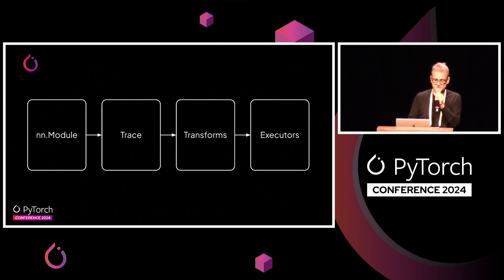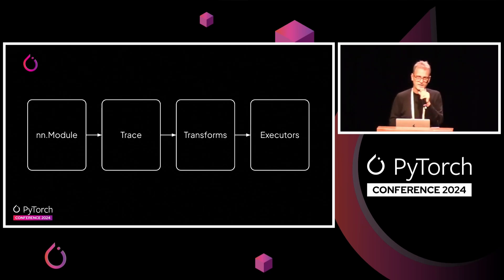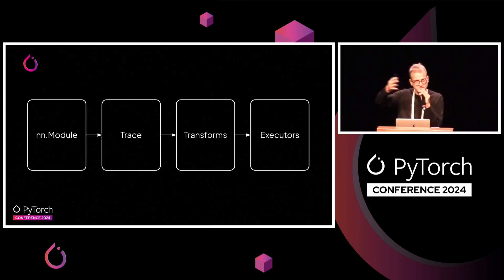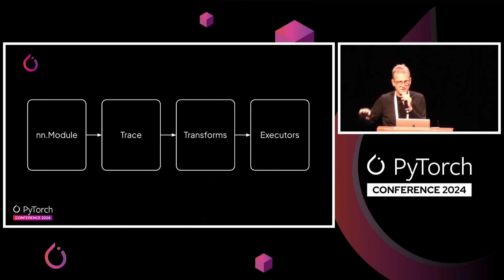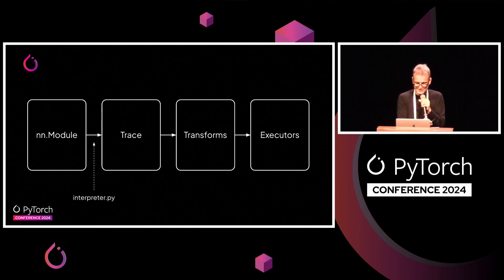The way Thunder works is you take an NN module — actually any PyTorch program, not necessarily just a module; it can be a function or whatever. We generate a trace out of it, and we'll see what a trace is. Then we have a series of composable transformations that you can layer one after the other that transform this trace into something else. And then this trace can be partitioned up and sent to different executors. The executors can be Torch Compile, Torch Eager, NVFuser, or custom Triton kernels.